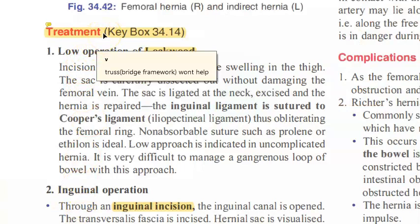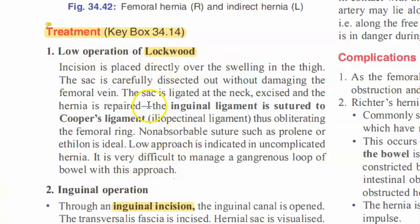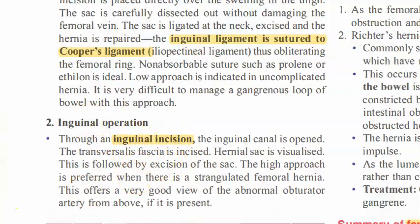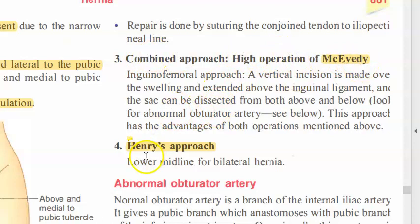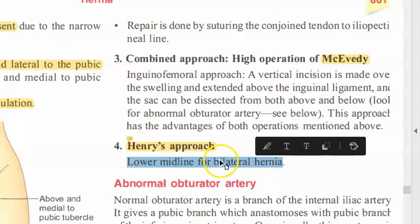For the treatment of femoral hernia: there is Lockwood's low operation where the inguinal ligament is sutured to Cooper's ligament. There is also the Lothissen inguinal (trans-inguinal) approach. Then there is McEvedy's high approach, and Henry's approach, which is the treatment of choice for femoral hernia.